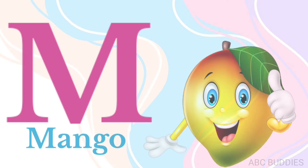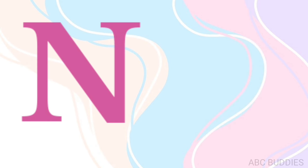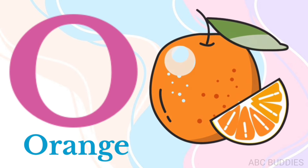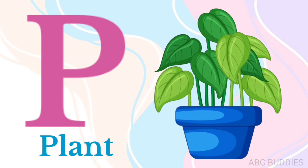M. M is for Mango. N. N is for Nuts. O. O is for Orange. P. P is for Plant.